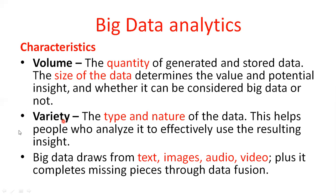Based on variety, you call it big data. The type and nature of the data helps people who analyze it use the resulting insights. Big data draws from text, images, audio, and video. For example, text such as PDF files or documentation files which are very difficult to process; images, which take a lot of time to process; audio data and video data. These are all called the variety of data.